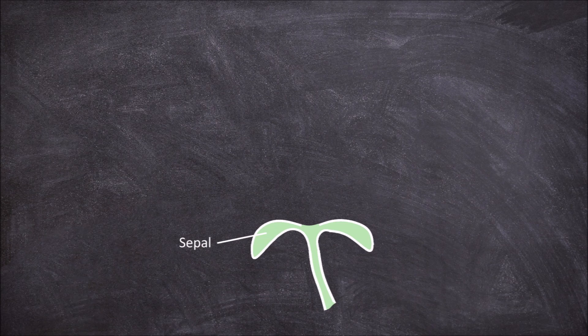These are the green leaf-like structures which protect the flower when it is in bud form and help provide structural support for the petals. All the sepals are collectively called the calyx.